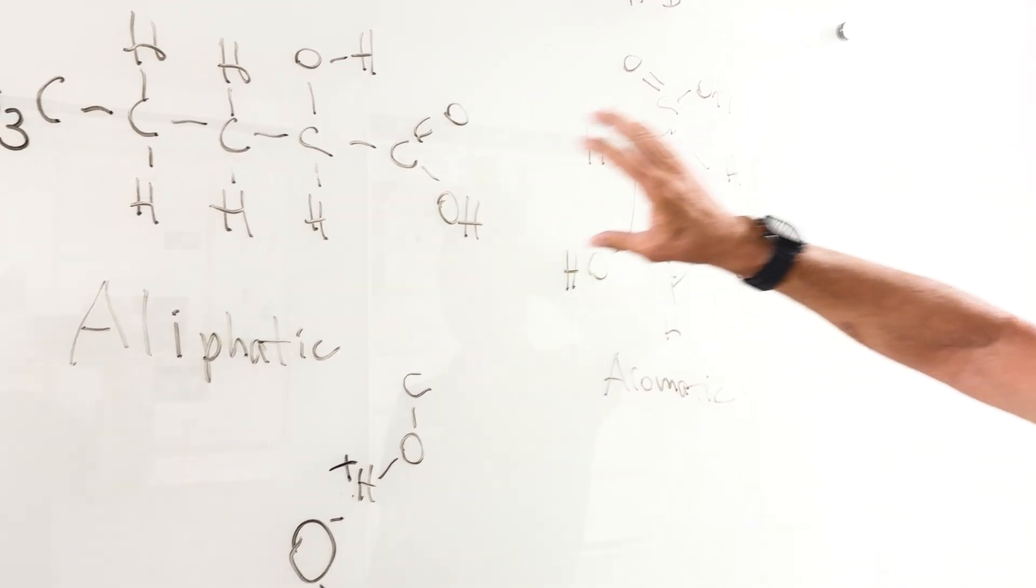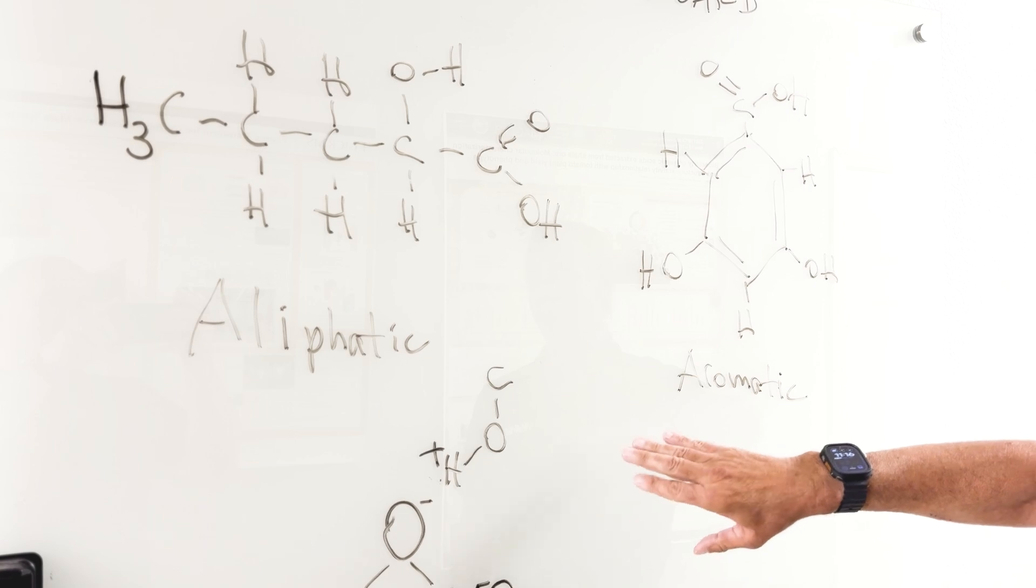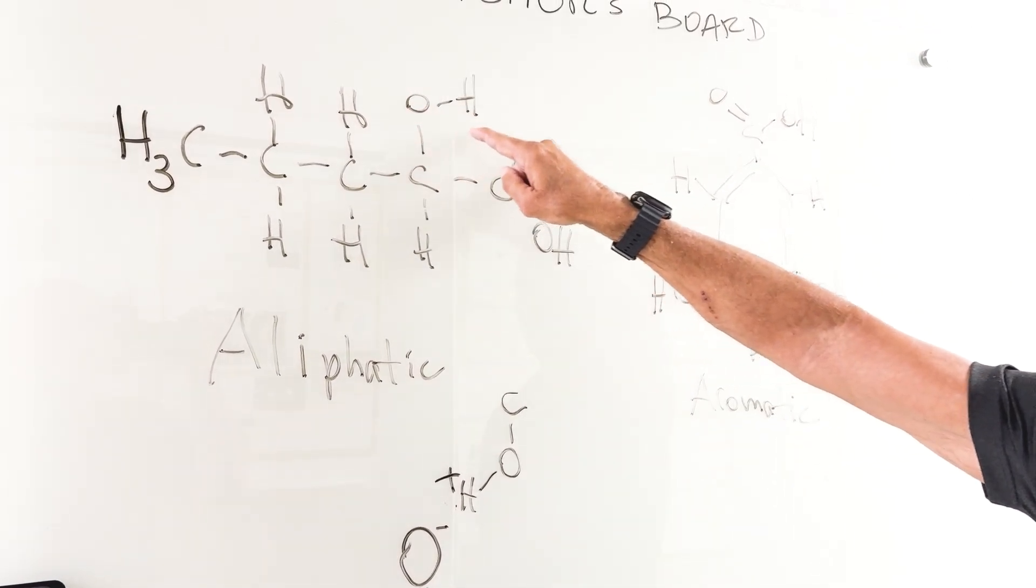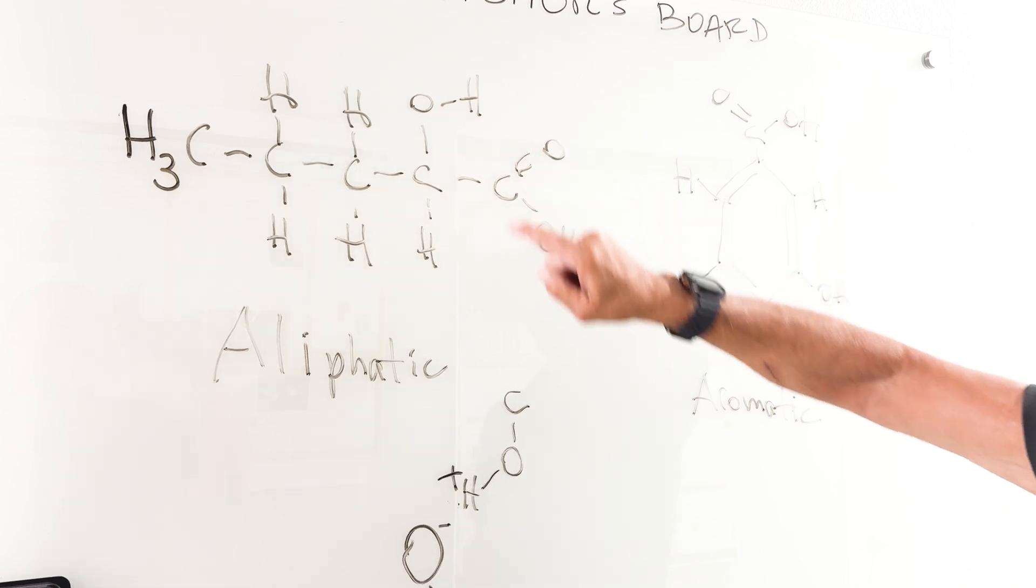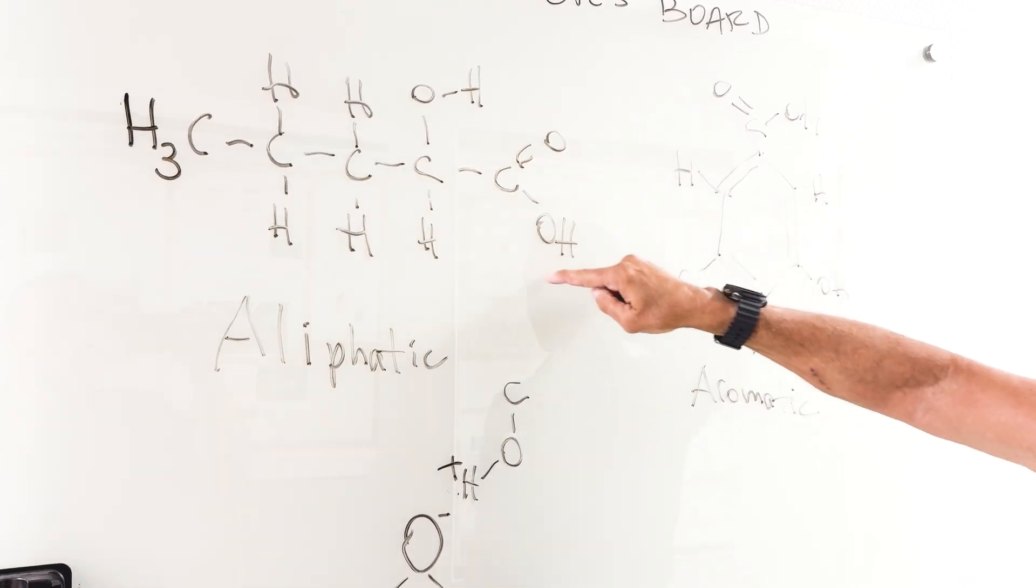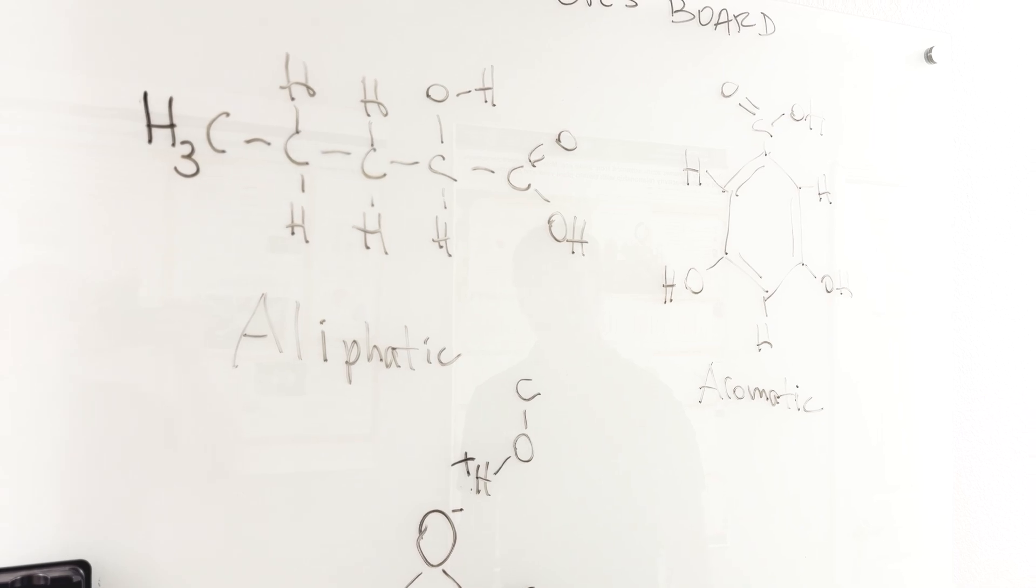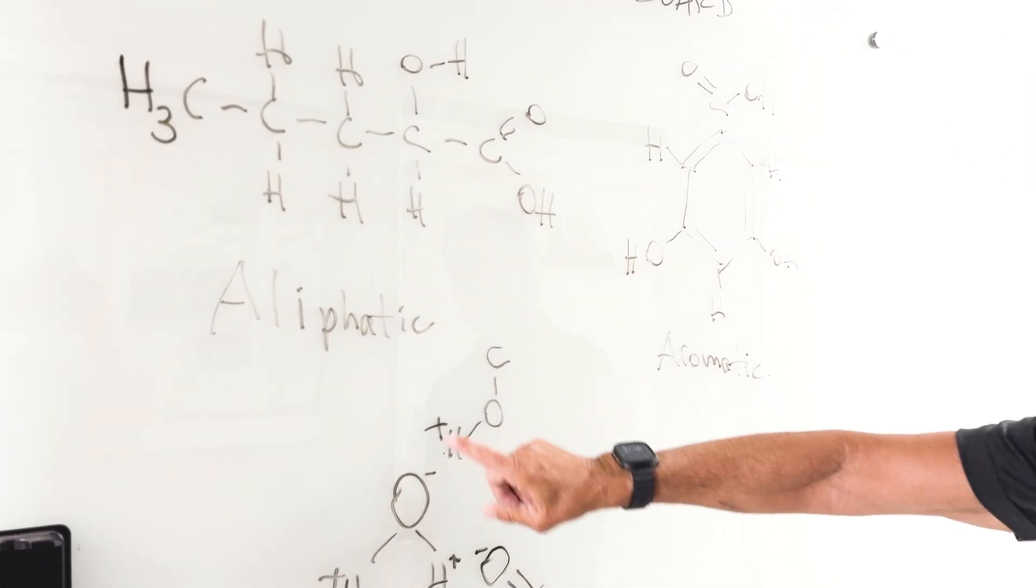Both of these aliphatic and aromatic molecules have what we call oxygen-containing functional groups. For example, they can have an alcoholic group, or they can have a carboxylic group like acetic acid, otherwise known as vinegar. And so when these are in water...